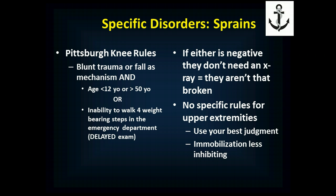We can also sprain the knee, which is a very common injury. It can be very difficult to distinguish a knee fracture from a knee sprain since both are quite painful and limiting. The Pittsburgh knee rules predict who needs an x-ray — meaning who might have a clinically significant fracture. First and foremost, the patient must have blunt trauma or a fall as the mechanism of injury. If they didn't fall or weren't struck, they don't need an x-ray — it's not broken.